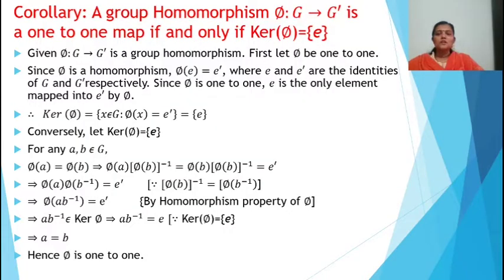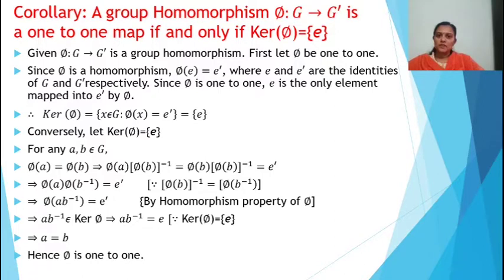Today we have a corollary related to the theorem of kernel of phi, and two problems. The corollary states: a group homomorphism phi from G to G' is a one-to-one mapping if and only if the kernel of phi equals {E}. We have to prove the if-and-only-if part. So, given phi from G to G' is a group homomorphism, assume that phi is one-to-one.